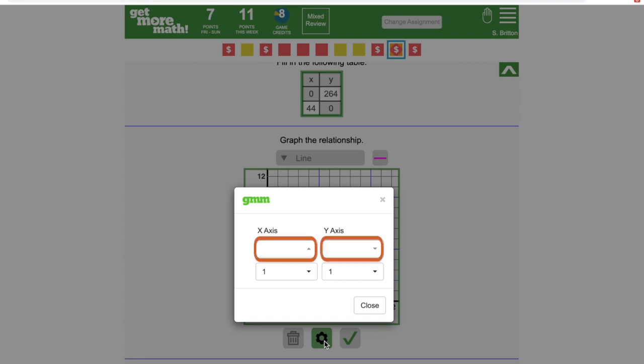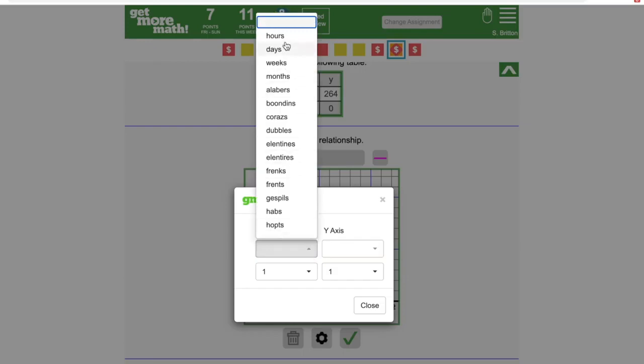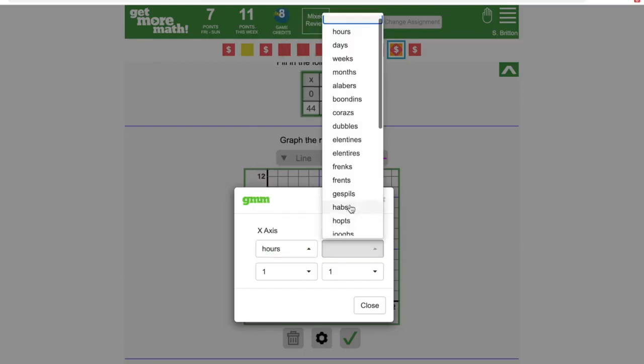Let's start by using the top menus to select the correct units to use for labeling each of the axes. So x is hours, and y is quects.